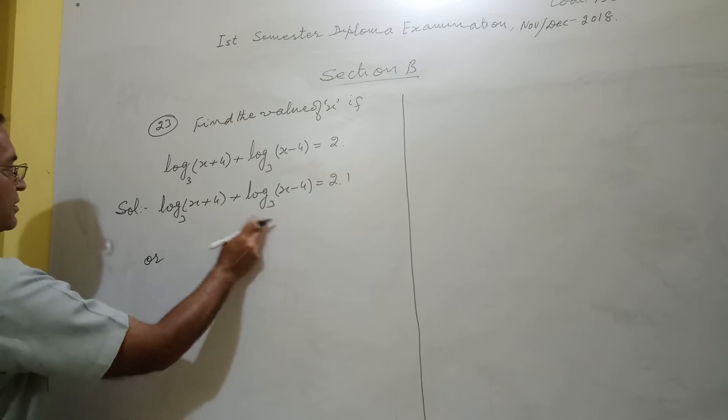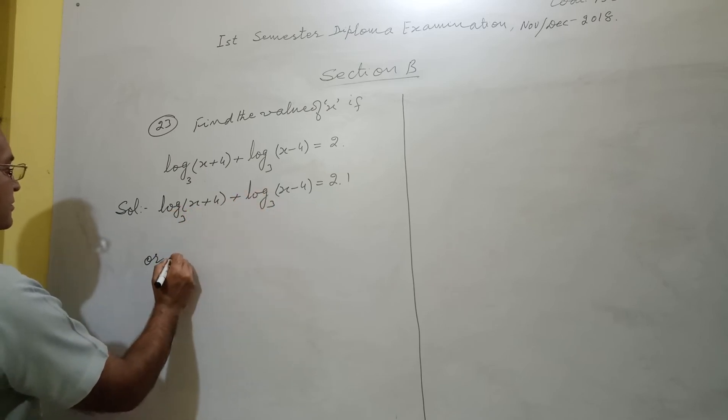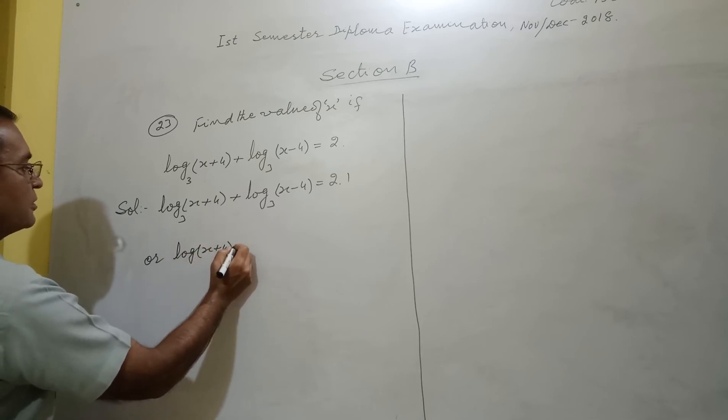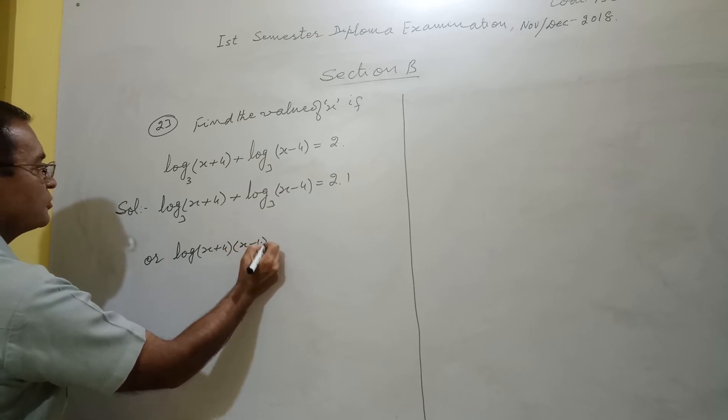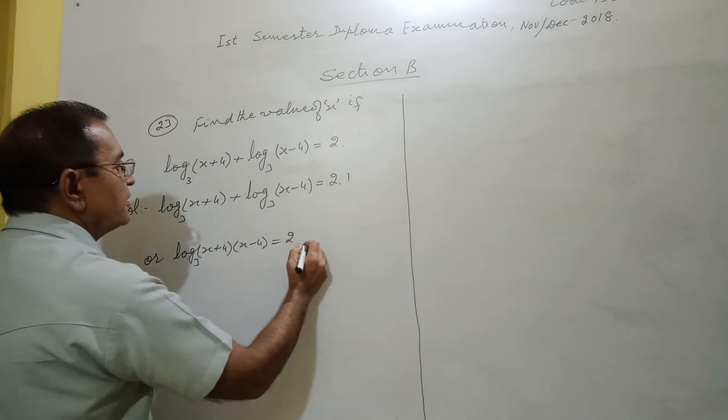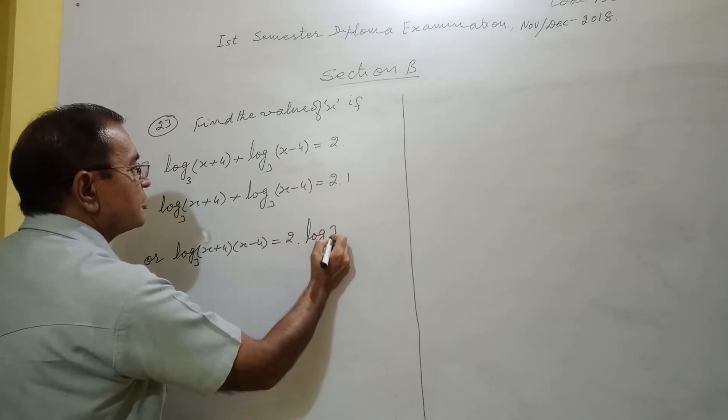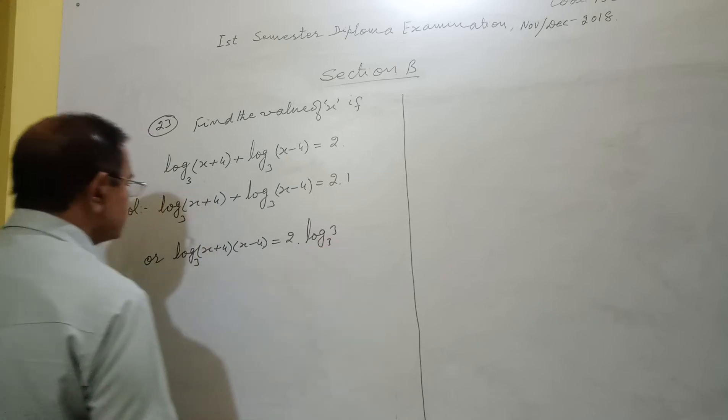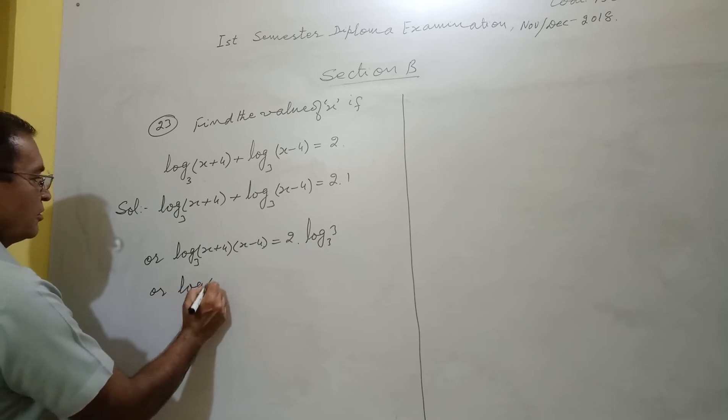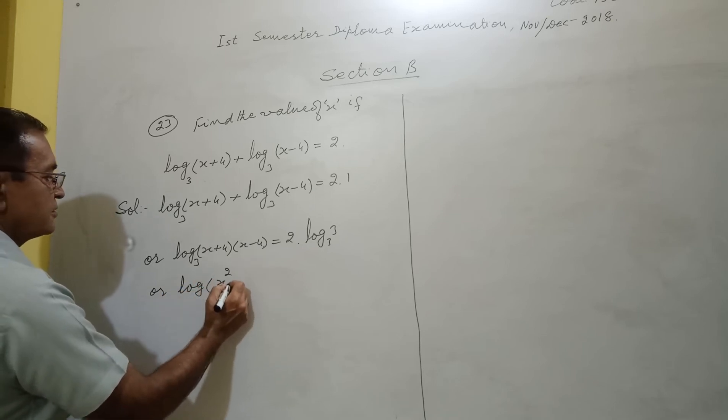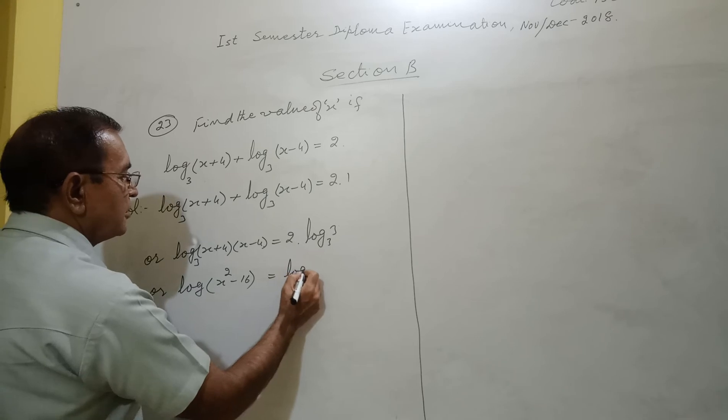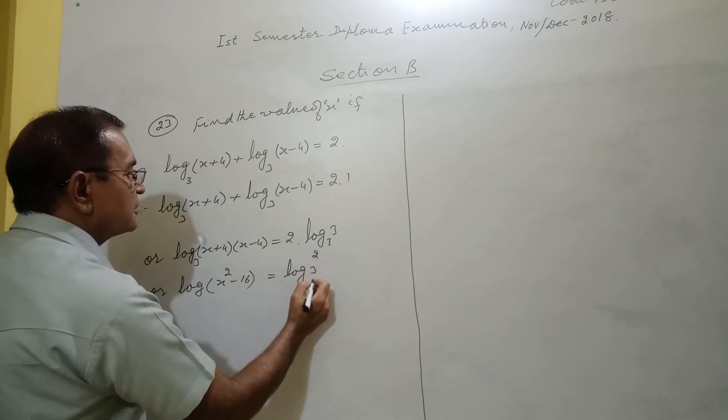Bases are same, it is the identity of log m plus log n. That is log of x plus 4 into x minus 4 base 3, which can be written as log of x square minus 16 equals log 3 square base 3.